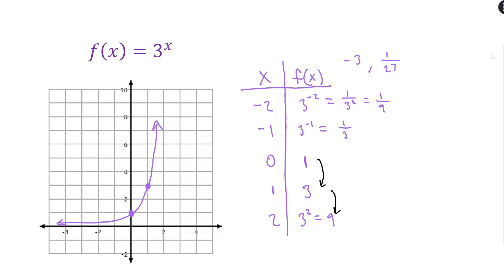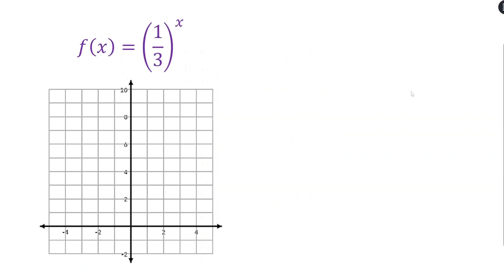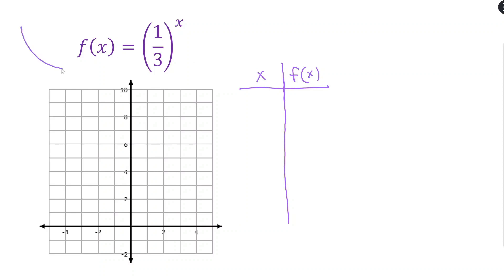The domain is all real numbers (−∞, ∞) and the range is (0, ∞), with horizontal asymptote y = 0. Now let's try a decreasing function: (1/3)^x. Plot your key points, make your table, and identify the features — pause and try it yourself.